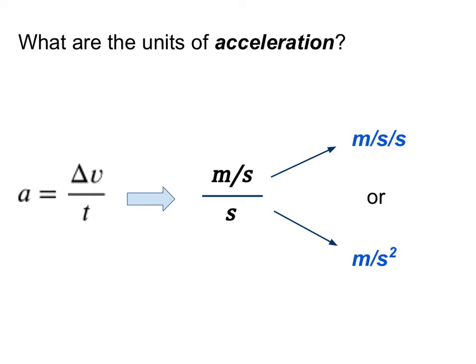So our formula has delta v on the top of a fraction and time t on the bottom of a fraction. So that gives us a hint as to what our units would be. We would be taking meters per second and dividing by seconds. Now watch out on your algebra here. Your seconds do not cancel out because the top part is being divided by seconds and the bottom is just seconds. So in fact, we could write this as meters per second per second or sometimes we take a little shortcut and we write meters per second squared.